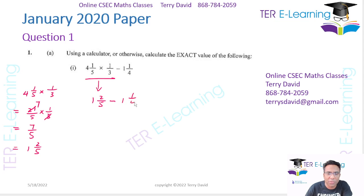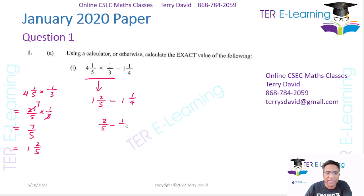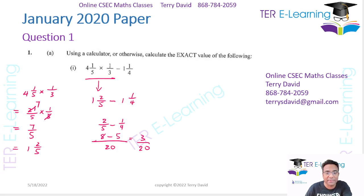Minus one and a quarter. Now, one minus one gives me zero, so all I really need to work out is two-fifths minus a quarter. My LCM is 20. Five into 20 is 4, four twos are eight. Four into 20 is 5, five by one gives me five. Eight minus five gives me three, so this answer is three over 20. That's my exact answer.